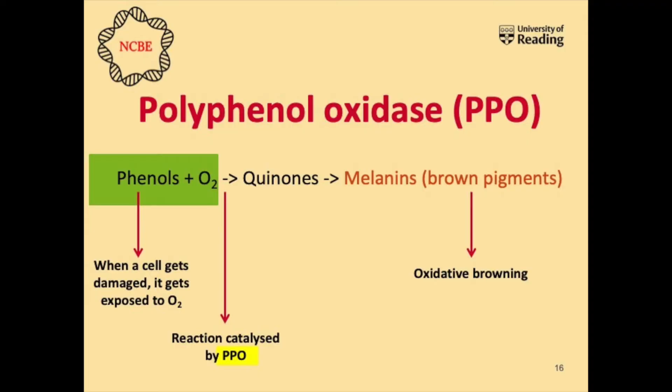Our enzyme here is PPO, and it contains copper ions — the same substance used to make your 1p and 2p coins — as part of its structure. The substrates are phenols and oxygen, and the products are both melanins and quinones.